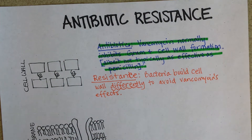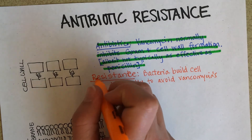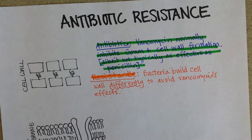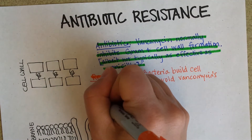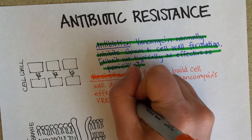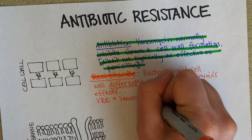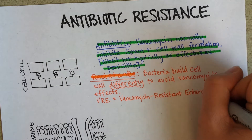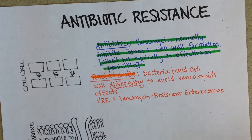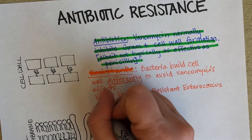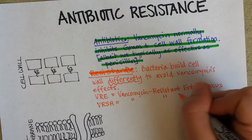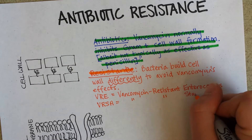The bacteria have more than one blueprint for how to build a cell wall, and they just choose to build it in a way that avoids vancomycin's inhibitory effects. An example of this is VRE — vancomycin-resistant enterococcus. A second example that is becoming more well-known is VRSA, vancomycin-resistant Staph aureus.